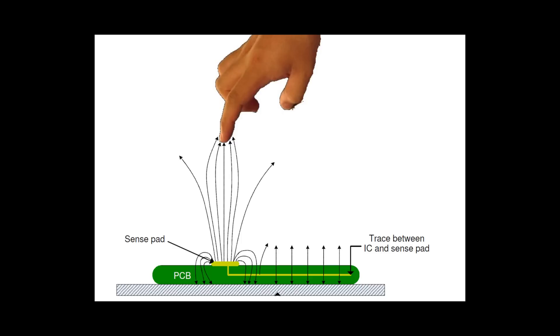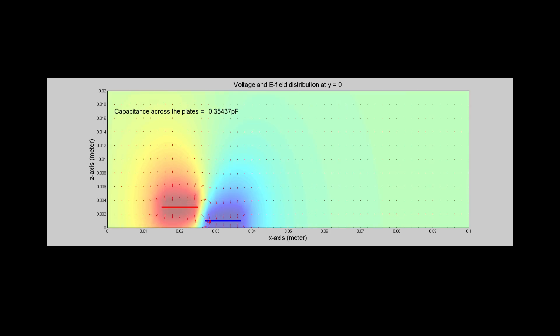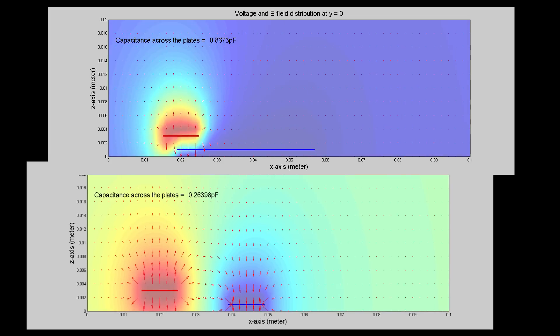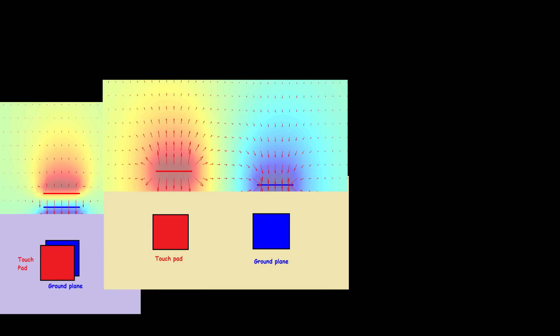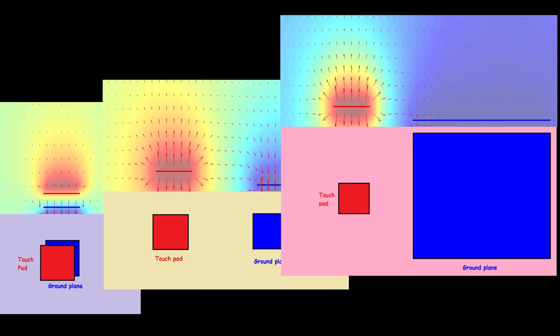The capacitance is more sensitive to the external object if the electric field is projected more into the air to reach the object. The electric field projection or distribution depends very much on the transducer's layout design. Therefore, the layout design has a direct effect on the transducer's sensitivity.